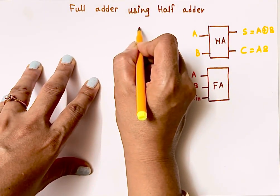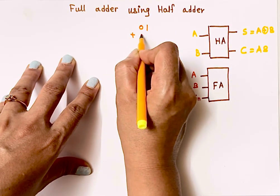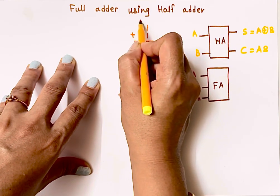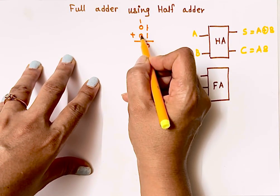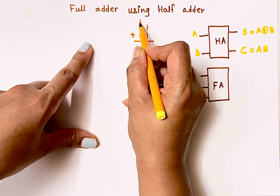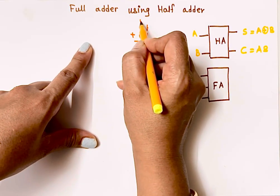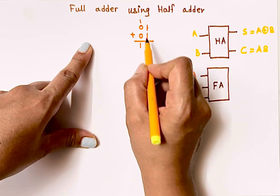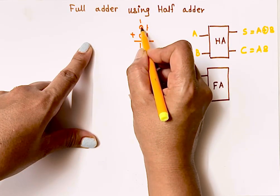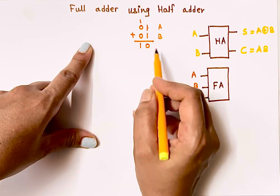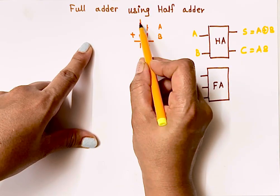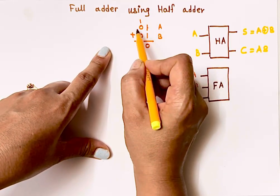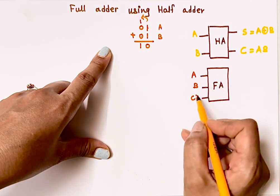Suppose my addition is 01 plus 01. When I add these two bits, 1 plus 1 gives sum 0, carry 1. But in a half adder I have only two inputs A and B — what about the carry generated from the previous addition? I need a third input to get the correct output. That's why in a full adder we have A, B, and C-in.